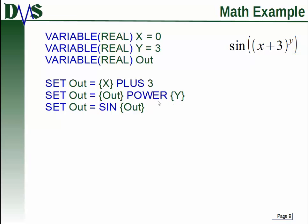So I'm taking 3 to the power of y, which in this case happens to be 3. So now Out is equal to 27. Excellent. And then the last thing I'm doing in here is SET Out equals sine of Out. So it's going to take the sine of 27. Now that one I can't do in my head, I'm afraid. And finally, it stores that output right there.